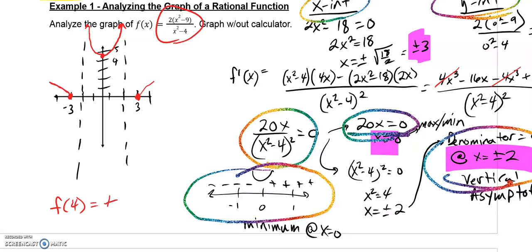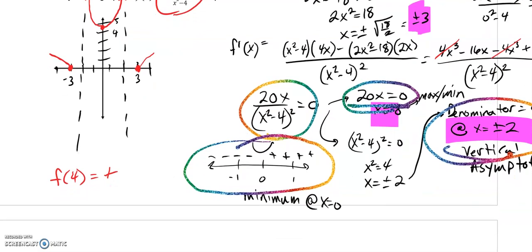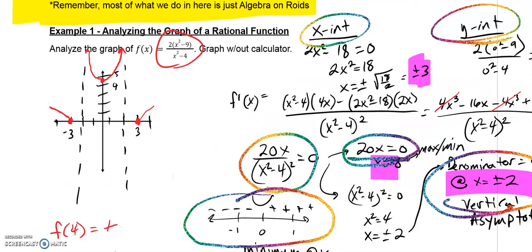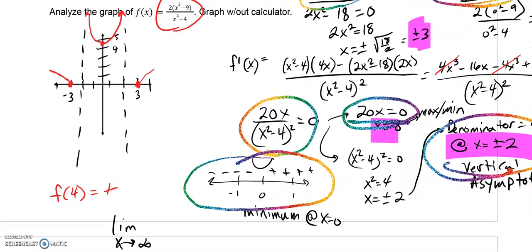And you can also think about end behavior. So if you take the end behavior of the function, that would be the limit as x approaches positive and negative infinity of your function, you would essentially get something that simplifies down to two. So if y equals two, there is a horizontal asymptote. And that gives me the rest of what I need, because I know it never crosses over that. It's symmetric, so it's going to be the same thing on that side.